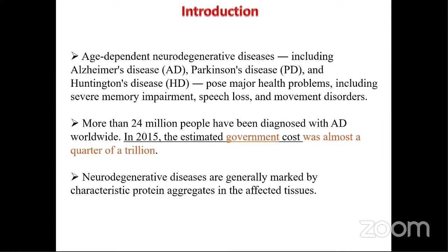To begin with, I would like to give a brief introduction about Alzheimer's disease and what made us look into graph modeling and AI-based techniques. It's an age-dependent neurodegenerative disease, which includes Alzheimer's, Parkinson's, and Huntington's. These neurodegenerative diseases pose major health problems including severe memory impairment and speech loss. It is estimated that more than 24 million people have been diagnosed with AD worldwide, and the cost for caregivers is almost a quarter of a trillion dollars.